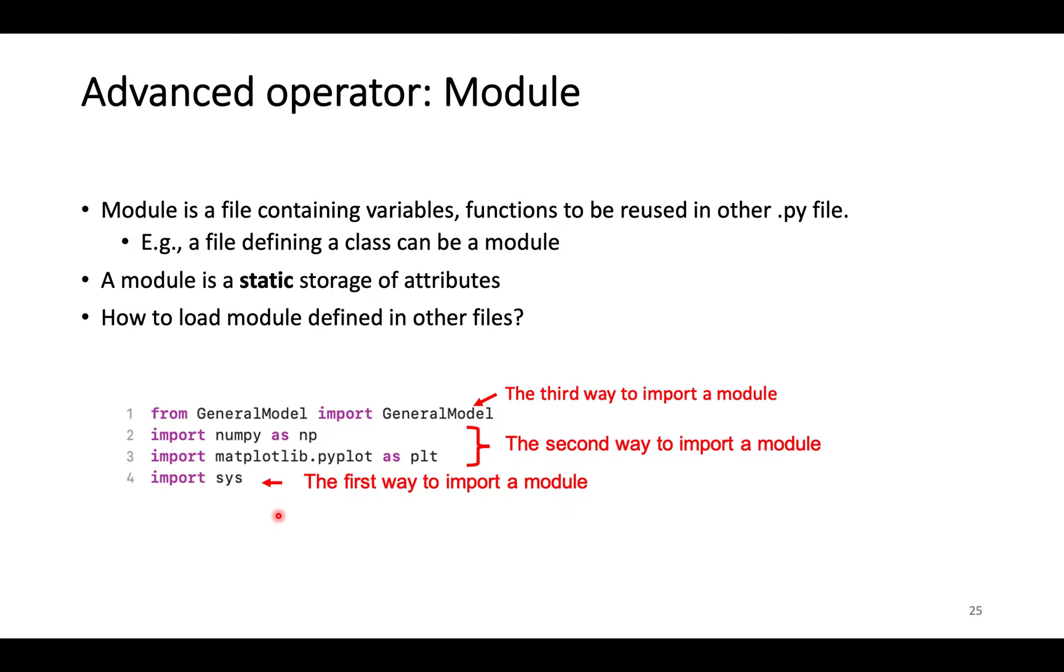Module is a file containing reusable variables and functions. Different from class which supports instantiation of multiple objects and modification of attributes, module is a static storage of the attributes. Like namespace, code in one file is not visible to other files. To make it visible, we need to load the module file firstly using import keyword. Here are three ways.